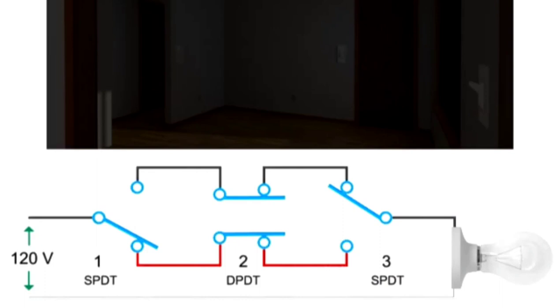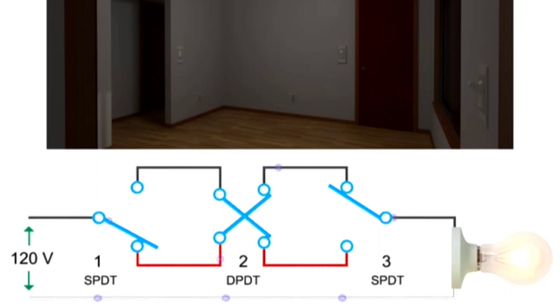If we keep switches one and three in the same positions and throw switch two into the crossover position, a complete connection is once again established and current flows through the red wire to the black wire to power the light bulb.